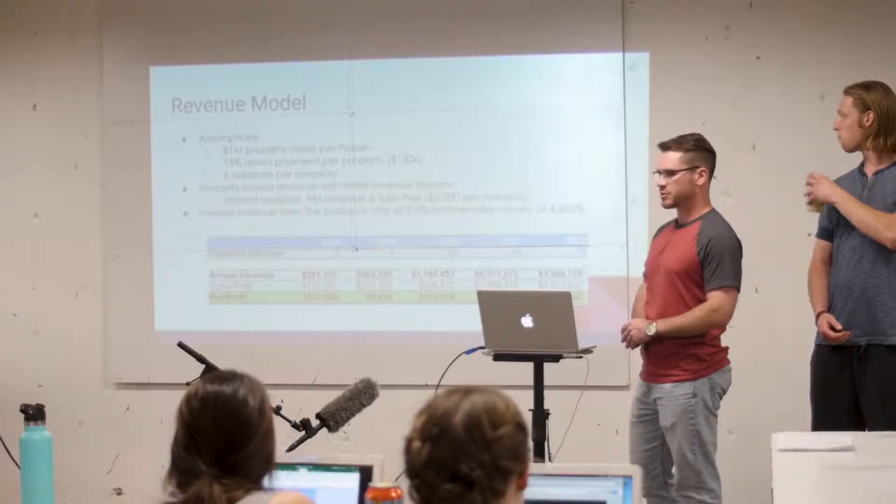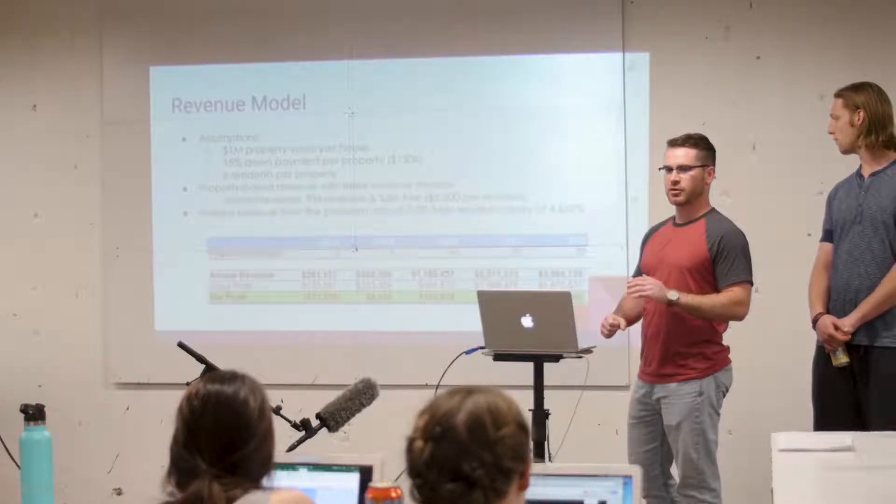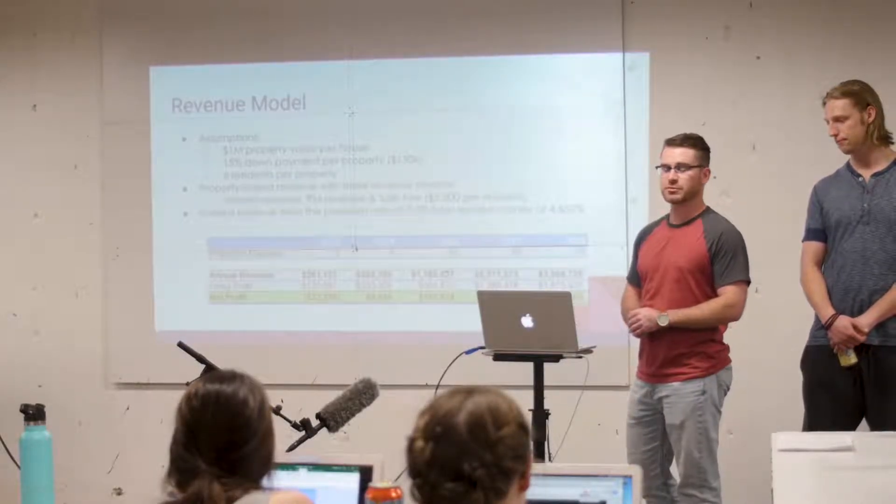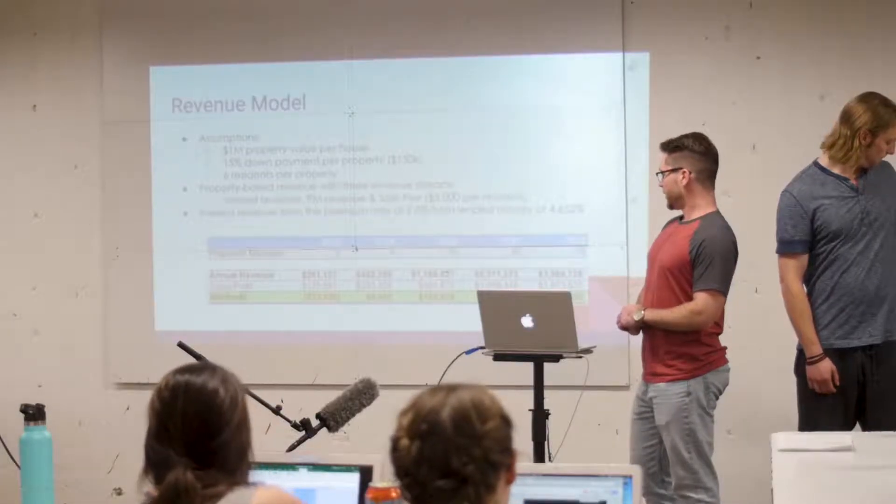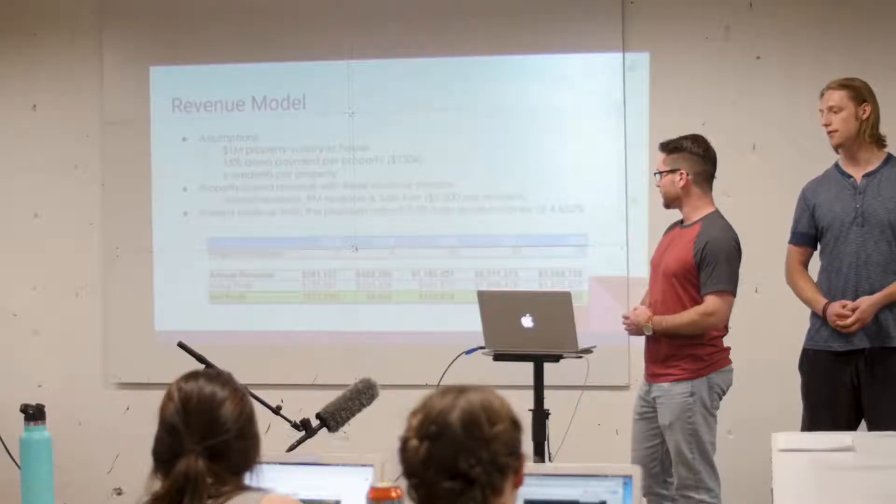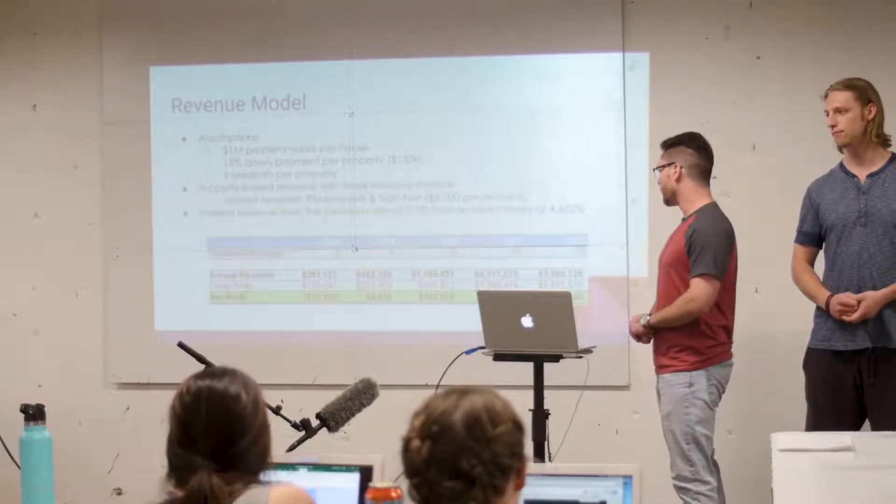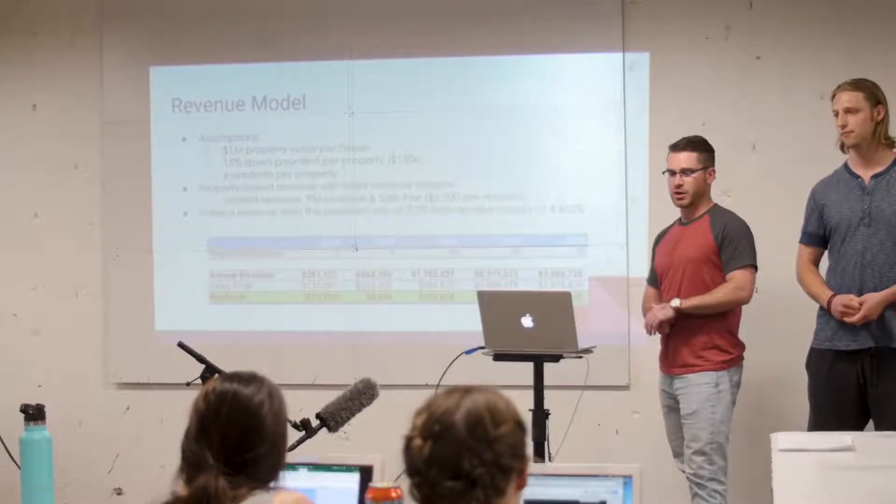Looking at our revenue for the next five years. So in our first year, we're going to start with just two properties that we manage, mainly just so that we can really nail down our logistics, our operations, and make sure that we're really smooth with how we run those before we try to grow fast. Next year, we're going to expand to four different properties. Then after that, really get into aggressive growth and hopefully be up to about 35 properties by 2022.